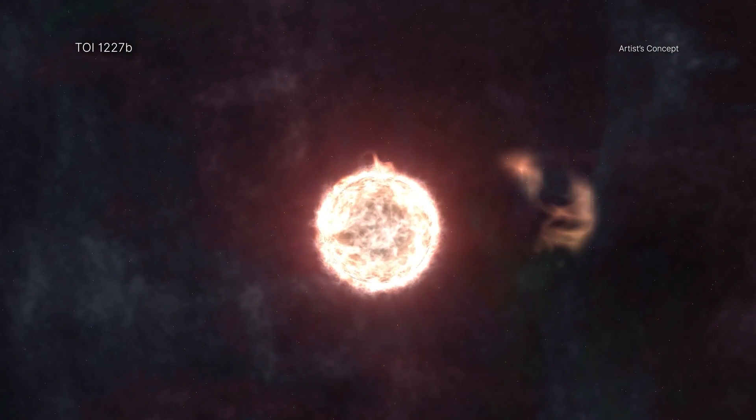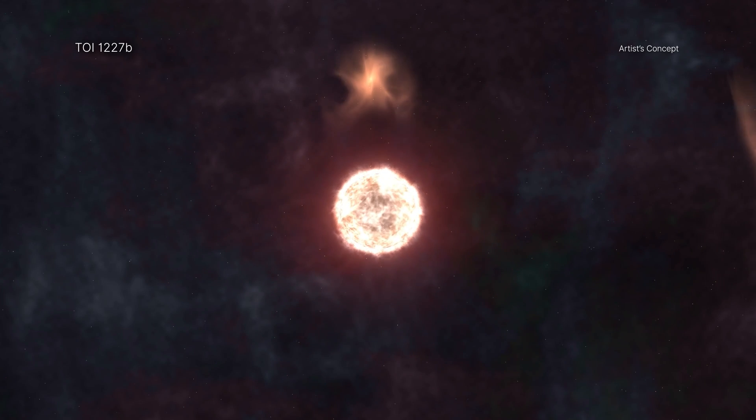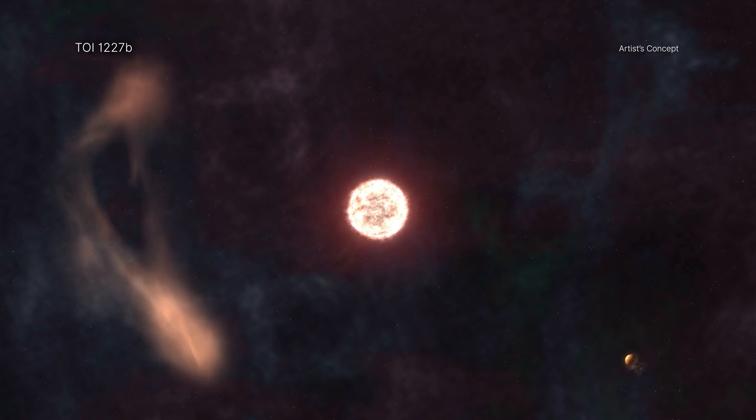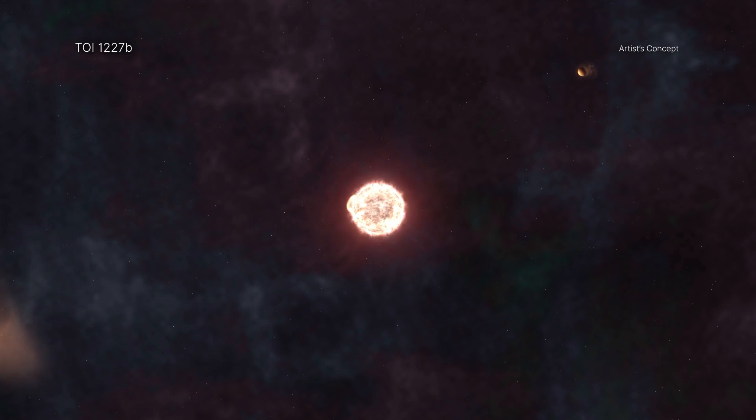The planet, named TOI-1227b, is in an orbit around a red dwarf star about 330 light-years from Earth. TOI-1227b orbits very close to its star, less than a fifth the distance that Mercury orbits the Sun, and the new study shows this exoplanet is a baby at a mere 8 million years old.